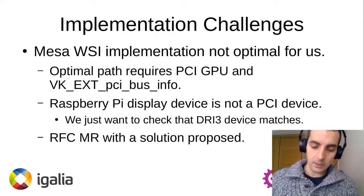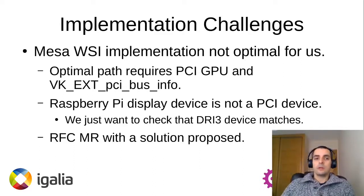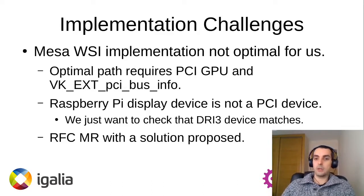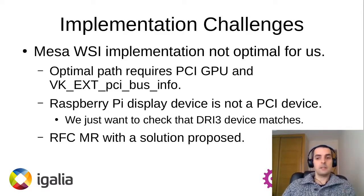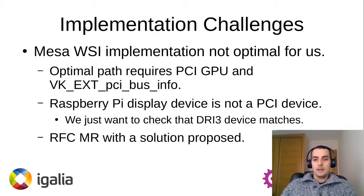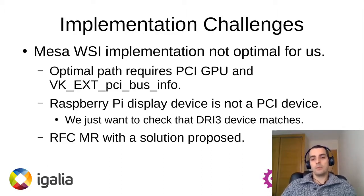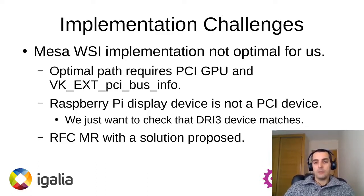As mentioned at the beginning, we are reusing the abstraction for the windowing system, but we found that for our case it is not optimal. The optimal path requires PCI GPU and PCI Bus info, but for the Raspberry Pi we don't have a PCI device, so we can't use that. Right now we have a merge request with some proposed changes, the discussion is ongoing, and we hope to improve this soon.